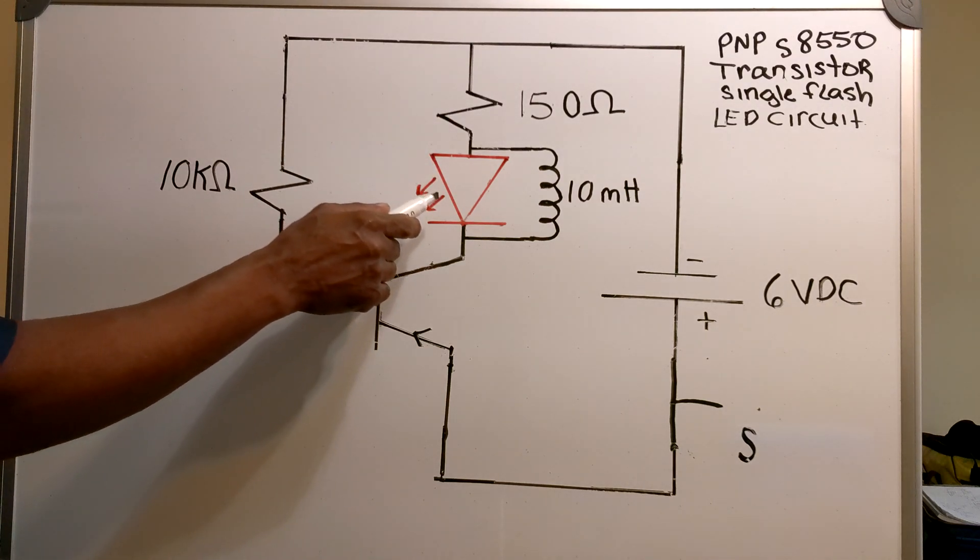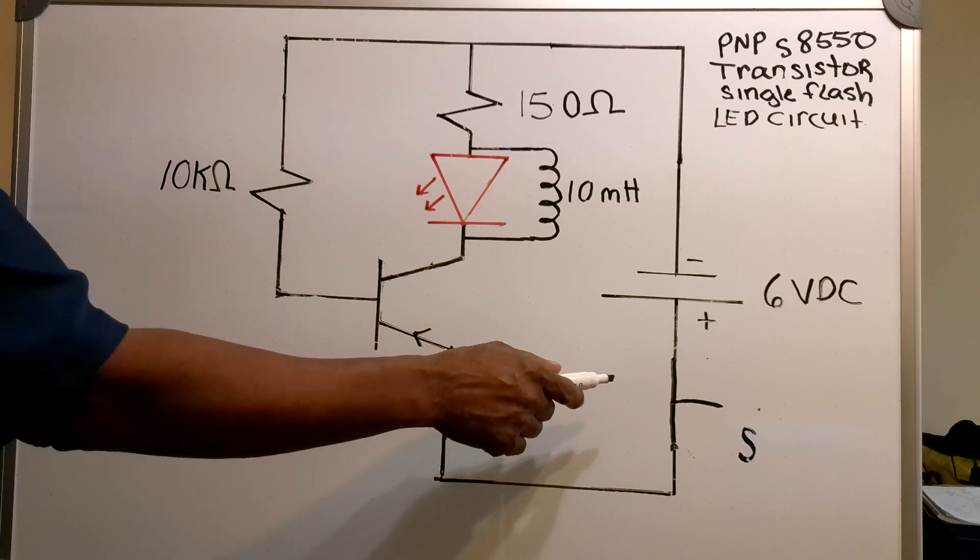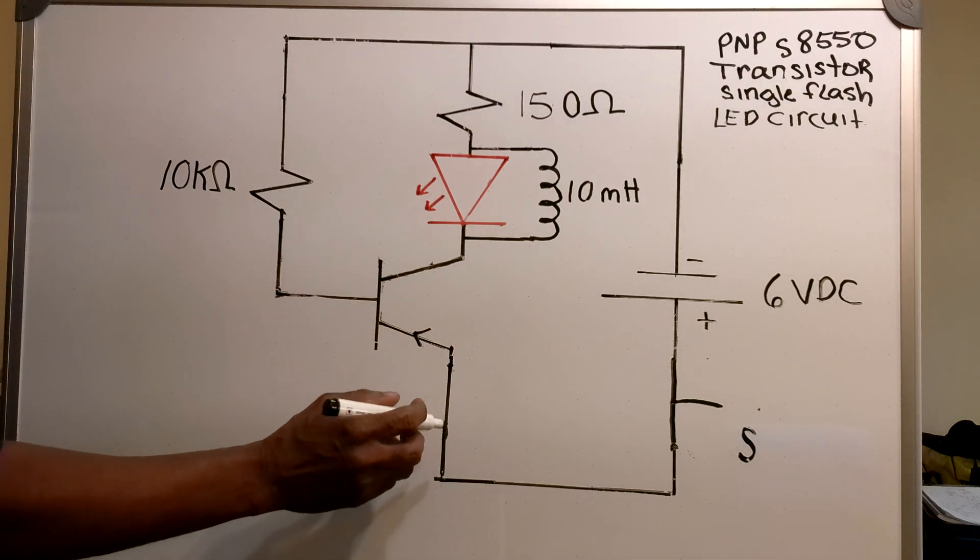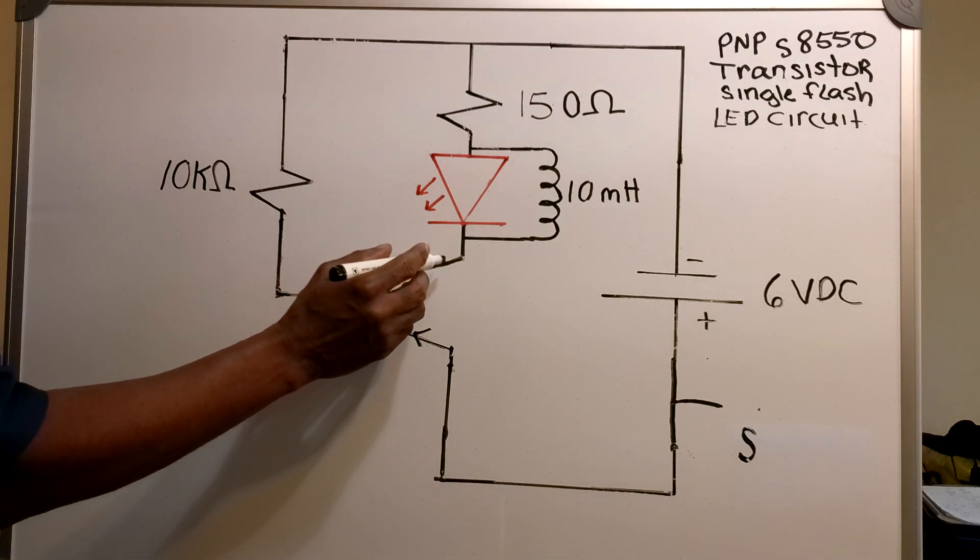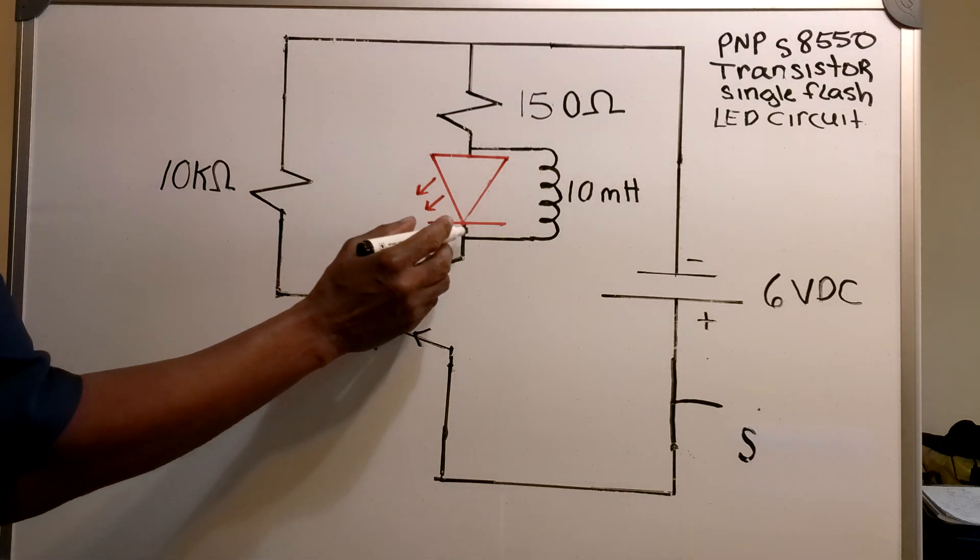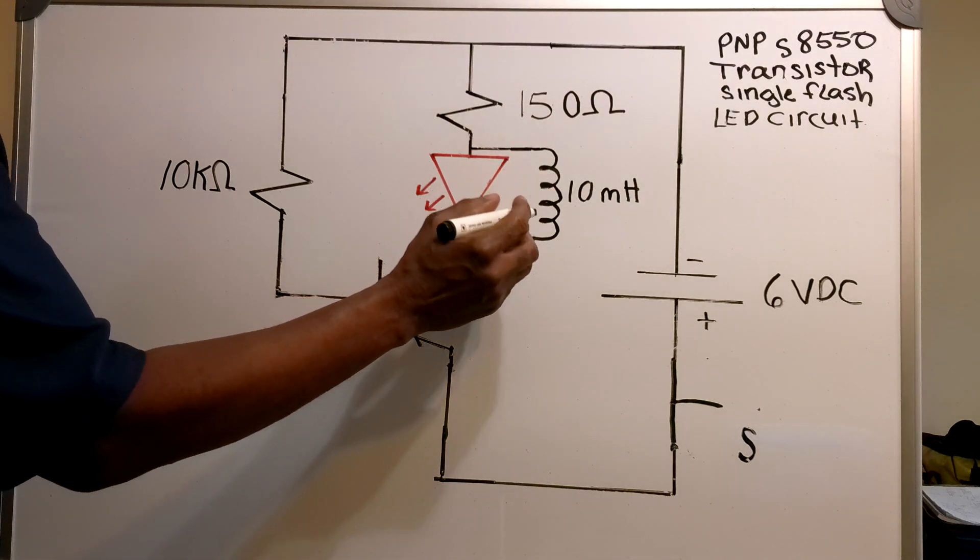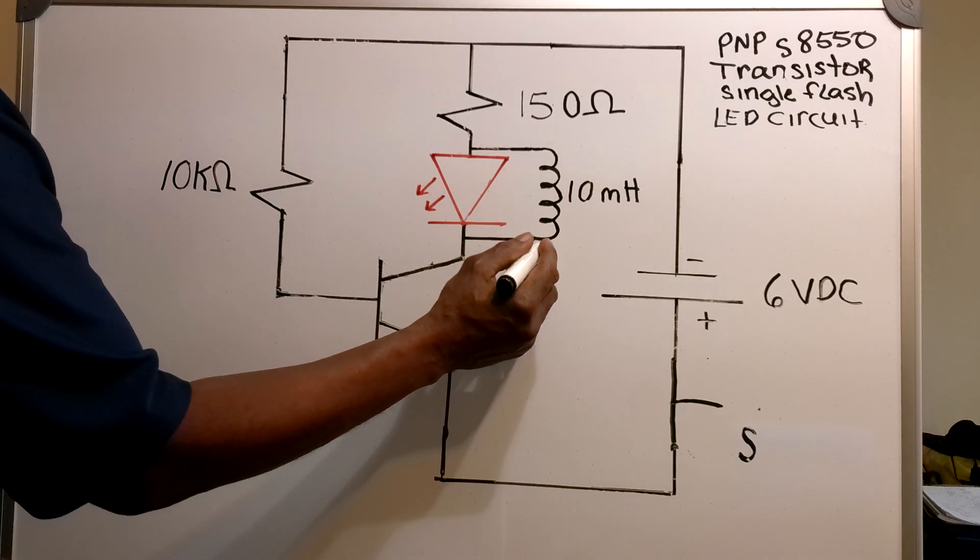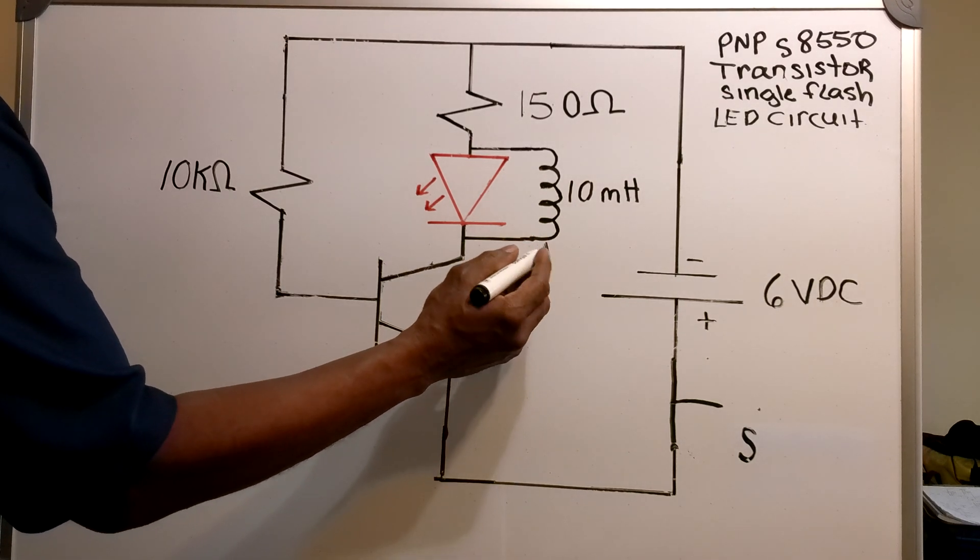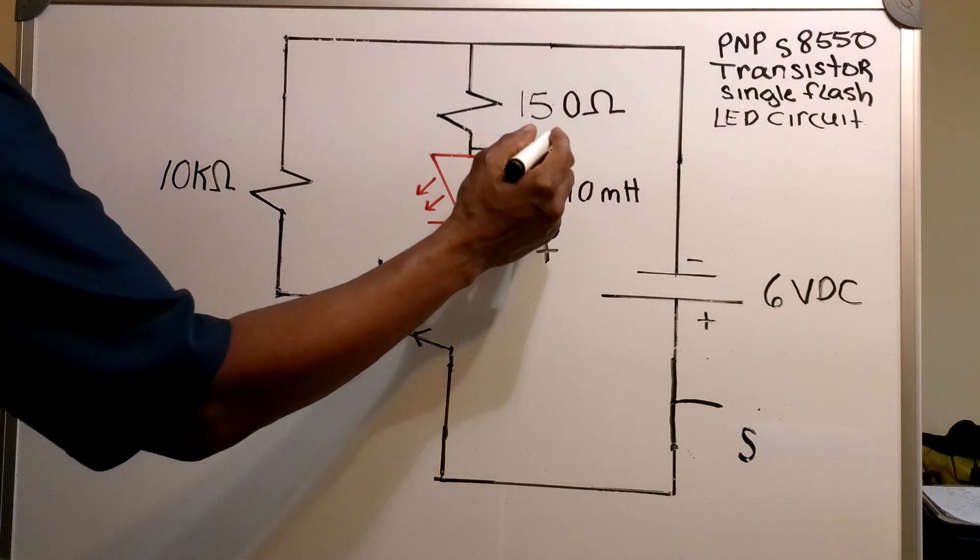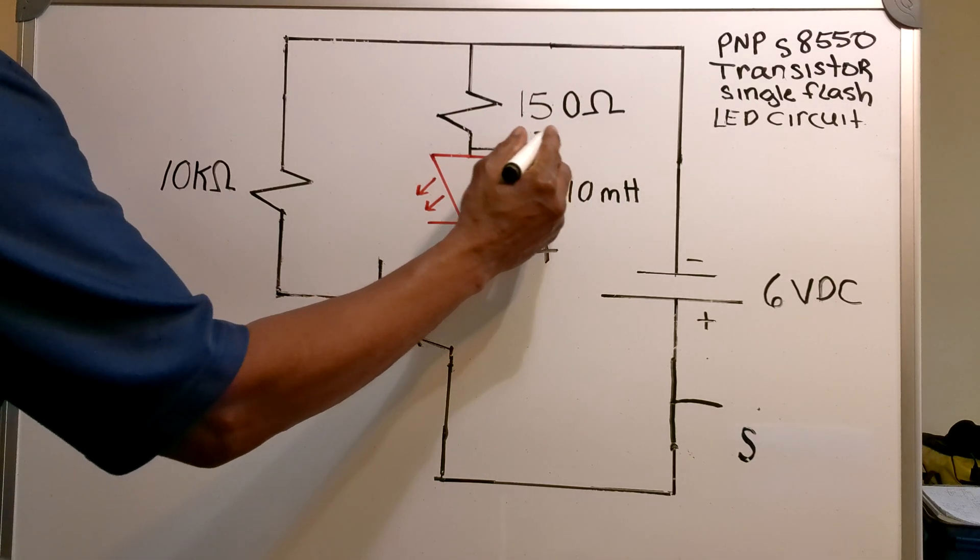Now at this time the diode is not lit. So the question now is how do I get the diode to light? The answer is to open the switch. Also, as the current is flowing through the collector and through the 10 millihenry inductor, the polarity of the inductor is this: this side of the inductor is positive and this side of the inductor is negative.